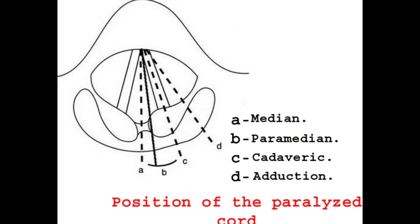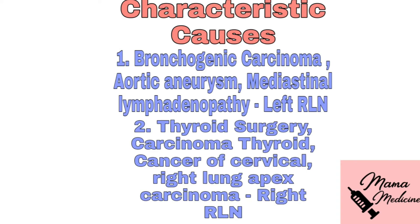This slide illustrates the various positions of the vocal cord: median, paramedian, cadaveric, and adducted. The causes of laryngeal paralysis may be supranuclear, nuclear, high vagal, low vagal, systemic, or idiopathic. This slide discusses characteristic causes — only the characteristic associations are tested on exams, so students must know these.